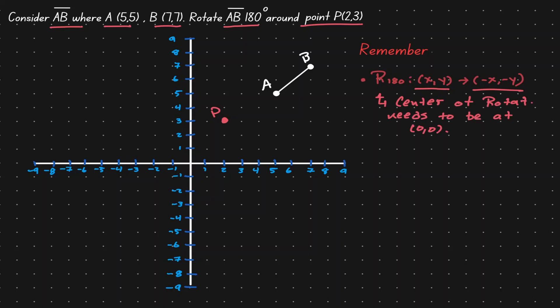Unfortunately, this is not the case, because our center of rotation is not at the origin. So we cannot just apply the rule right away. But we can modify this problem to make it fit the rule. We need to see what kind of movement is needed to bring the center of rotation exactly to the origin. That movement is 3 units down and 2 units to the left.